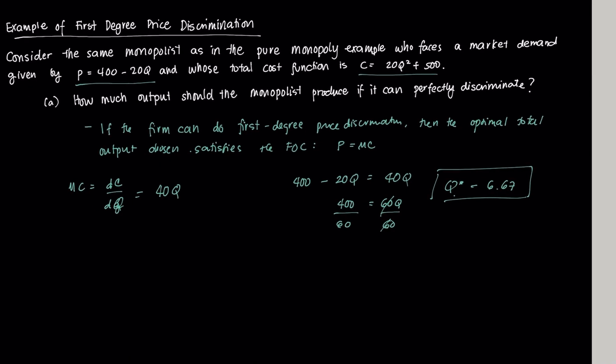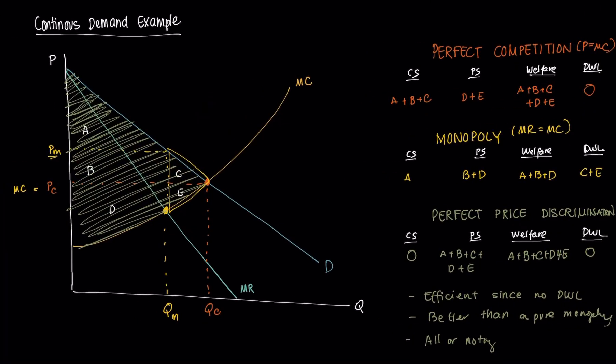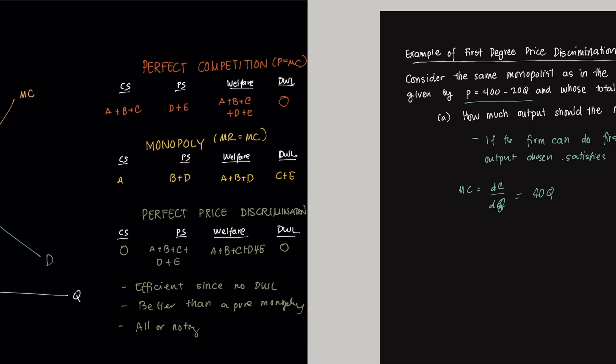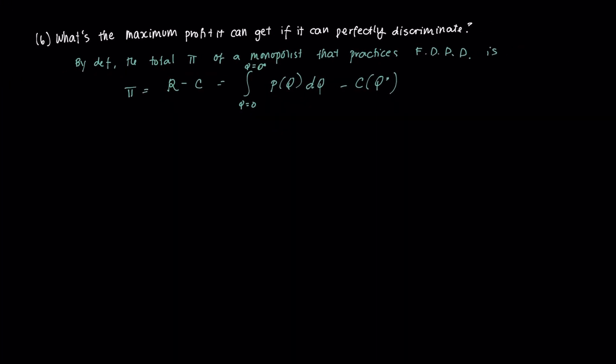If you notice, we had this towards the last video. Essentially, we are getting this area here, that entire area there. That is the area we are getting because that's the total potential profit that the monopolist could get should it be able to perfectly discriminate. That's what this integral is.